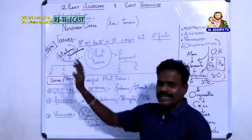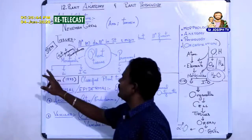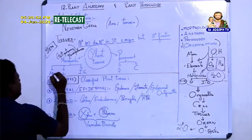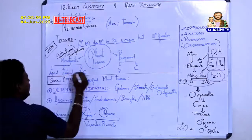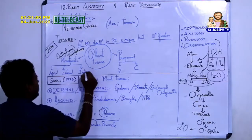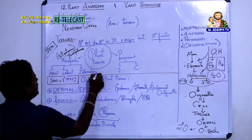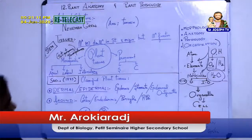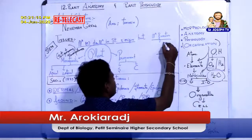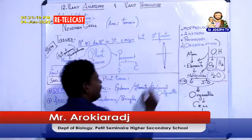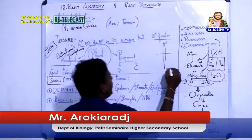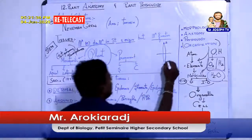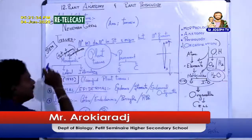Meristematic tissue is classified into three types: apical meristem, lateral meristem, and intercalary meristem. When you look at a plant, you find two ends — the tip of the stem and the tip of the root — these are the apical ends. Meristematic tissue found there is responsible for the lengthwise growth of the plant.